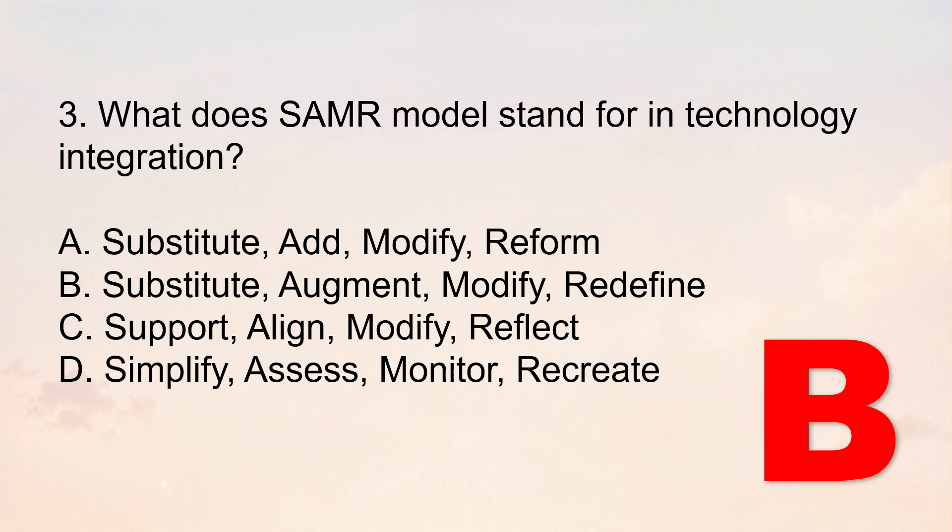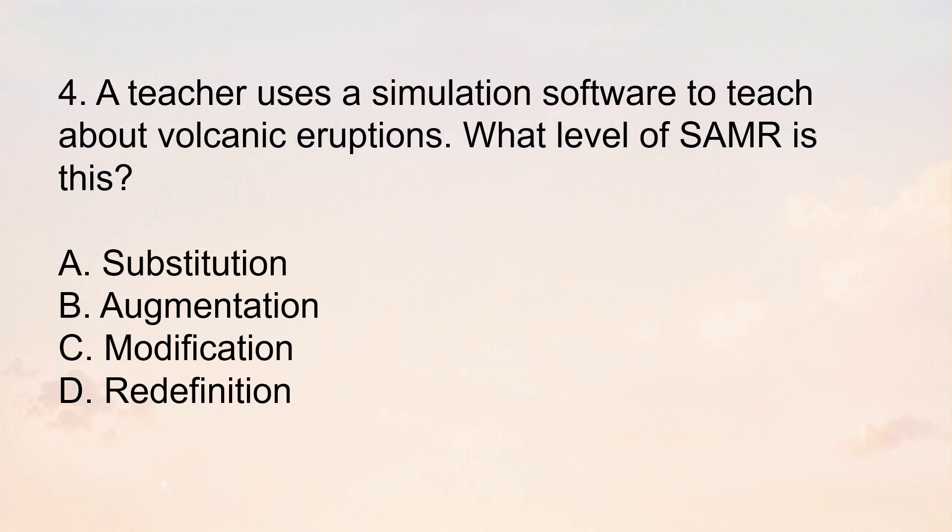The correct answer is Letter B — Substitute, Augment, Modify, Redefine. The SAMR model describes levels of technology integration from basic substitution to full transformation. The other options are just made up or incorrect expansions. So only Letter B is the best answer.